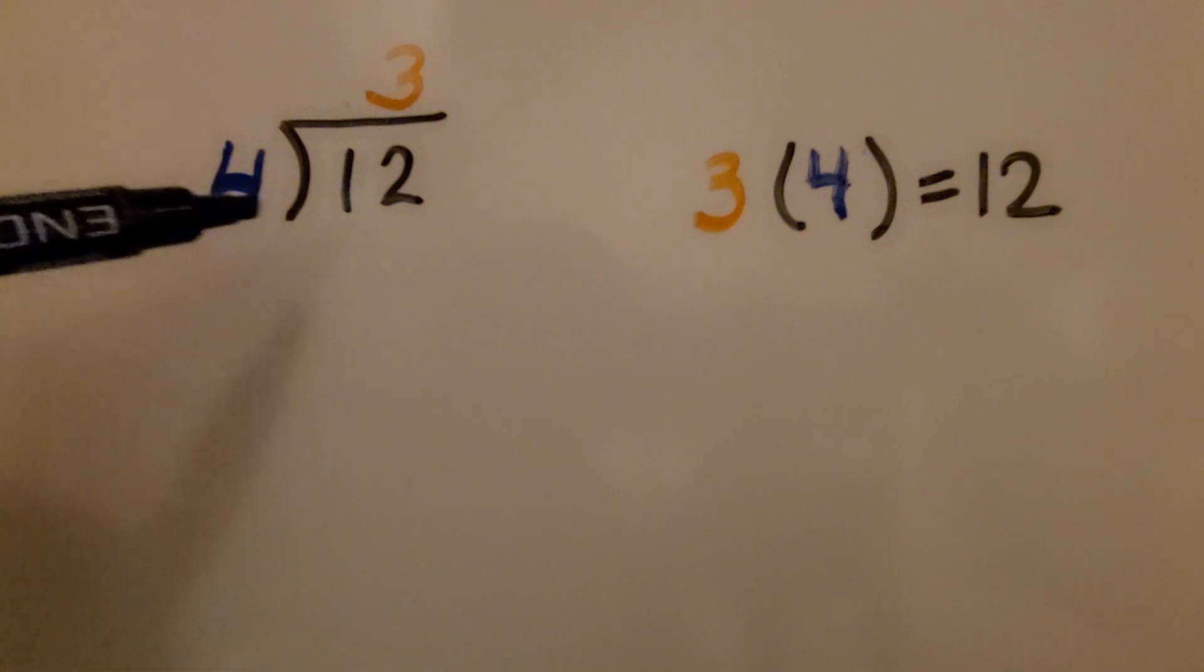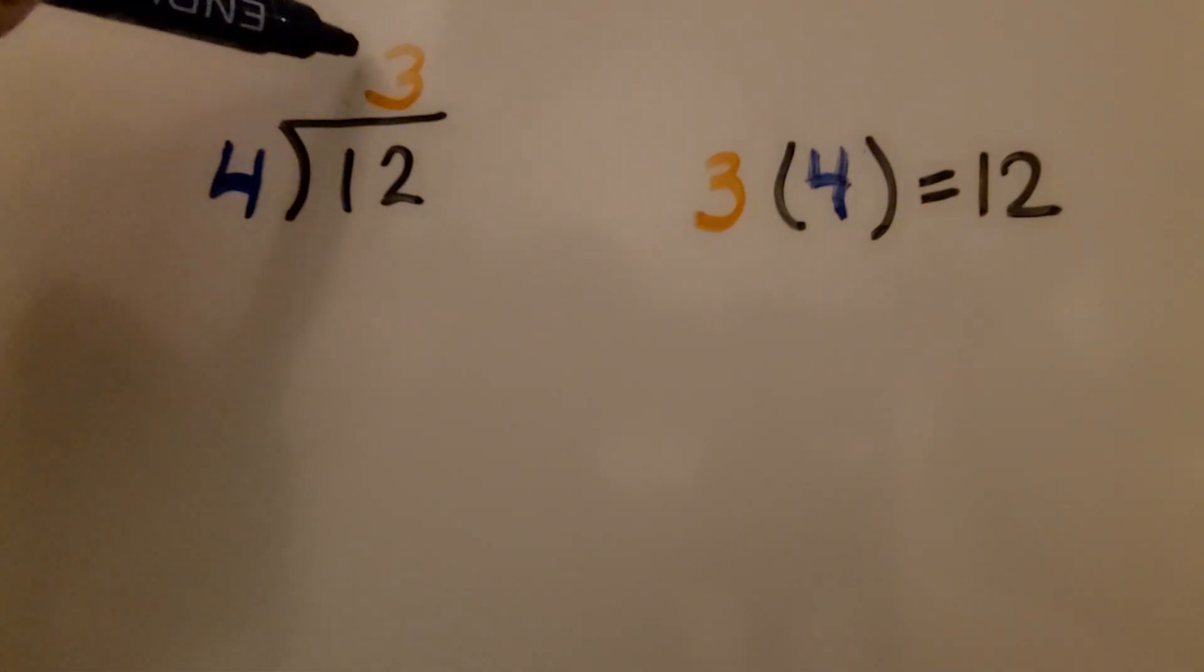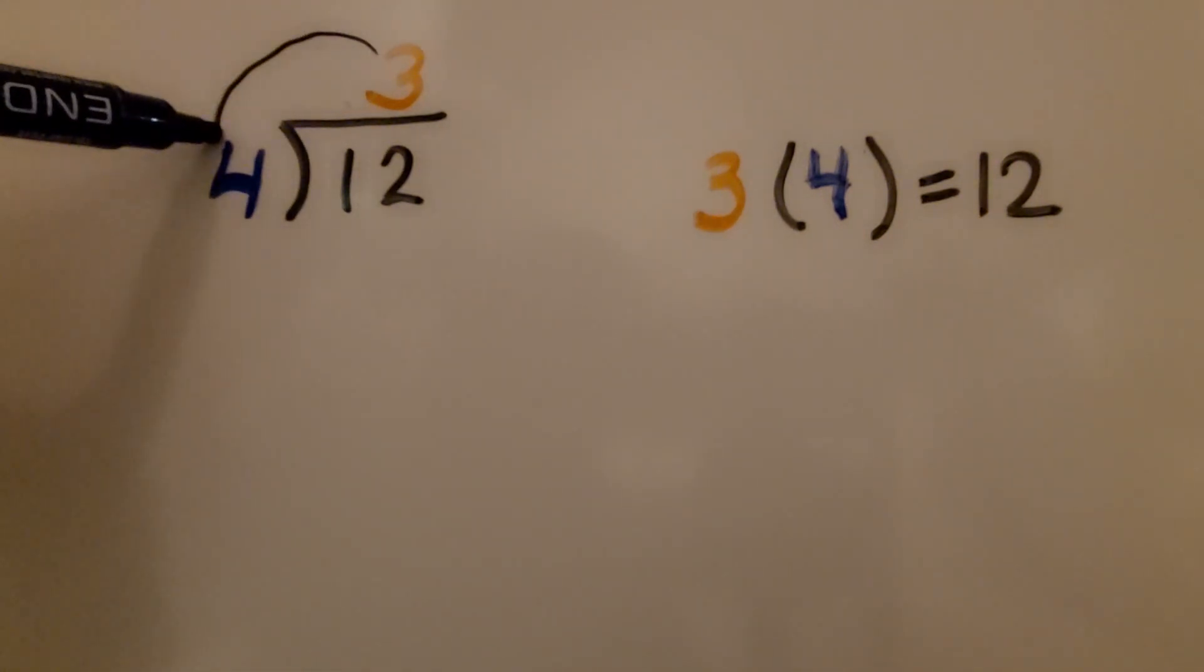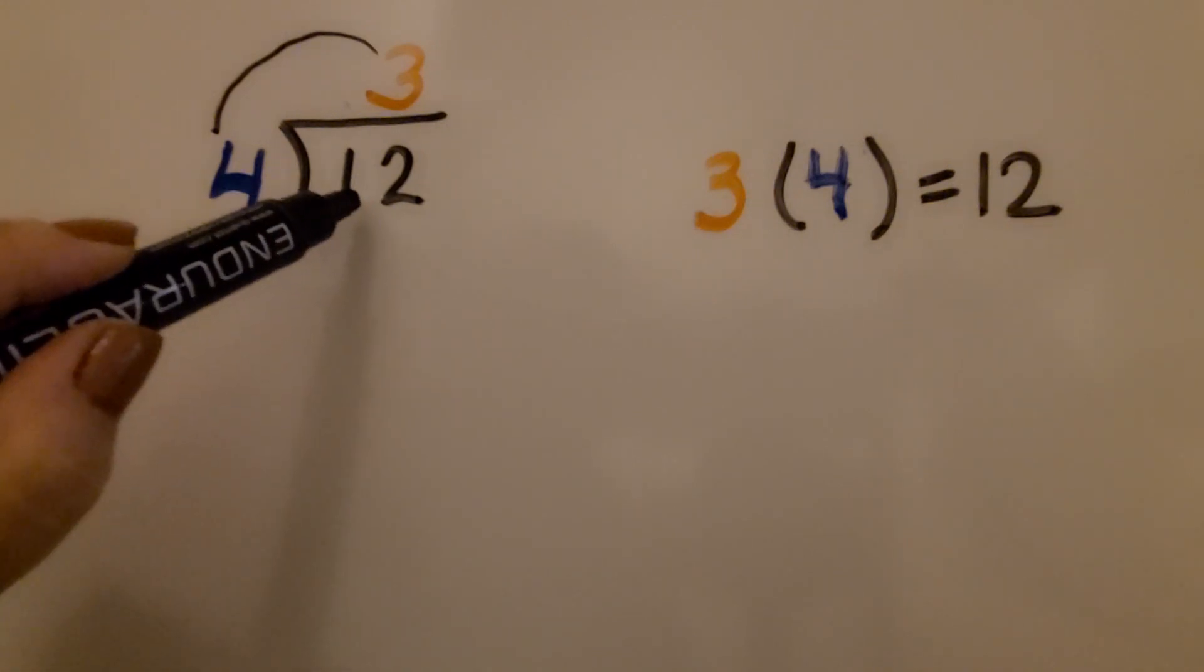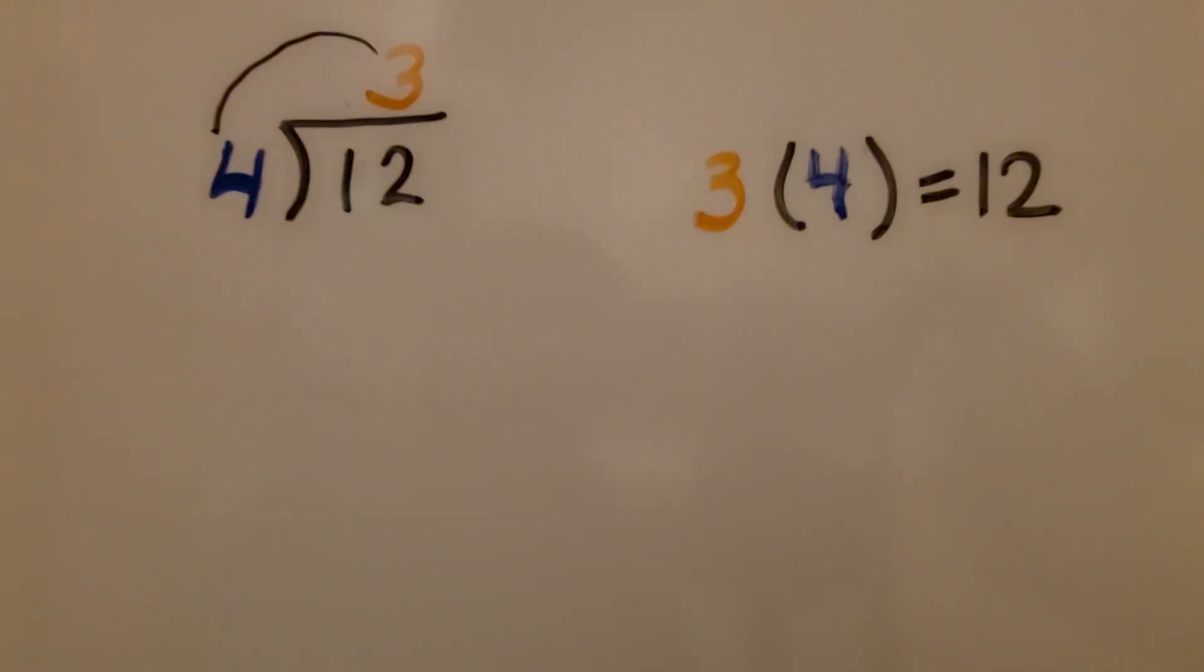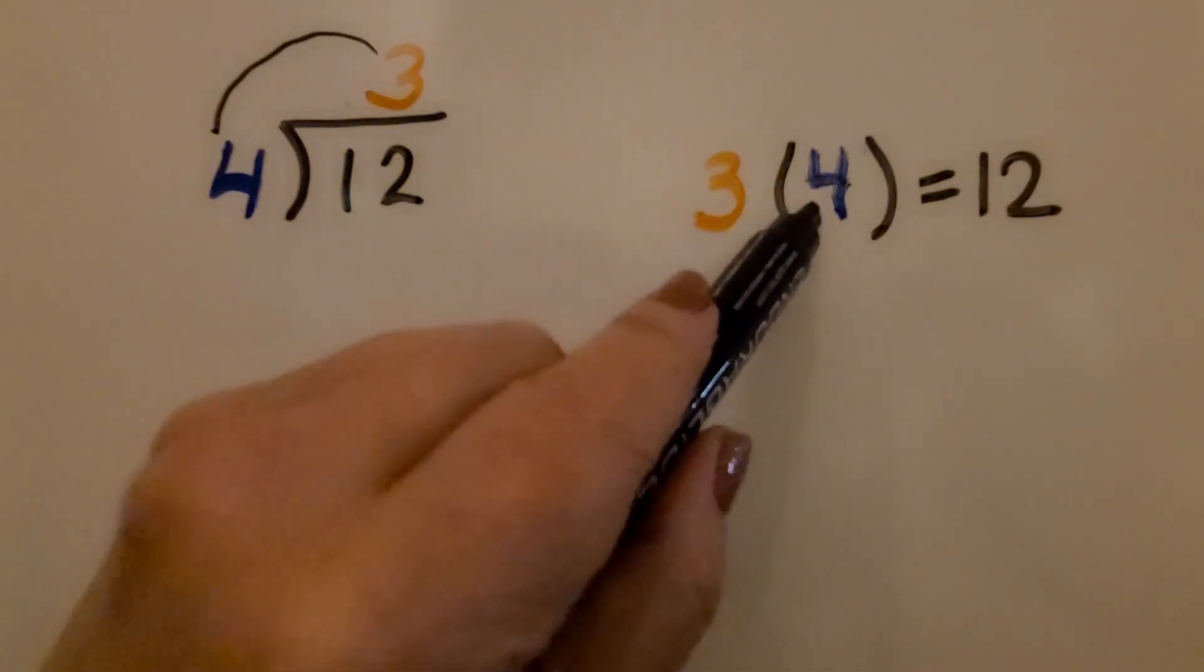So remember, when we do a division problem, our quotient multiplied by the divisor should equal the dividend. So we can check our work for our division by using multiplication.